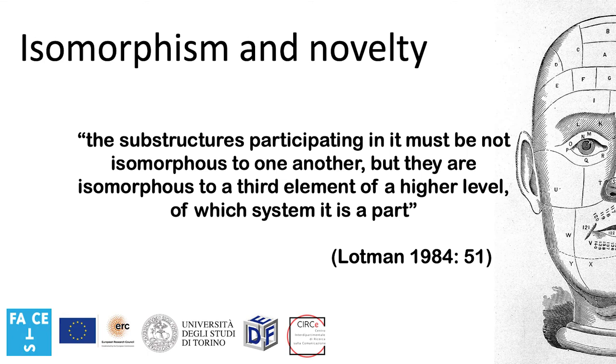Different is the case of the elaboration of novelty, of the creation of new texts. To address this point, Lotman draws on another type of isomorphism which remains unnamed. In this case, the substructures participating in it must be not isomorphous to one another, but they are isomorphous to a third element on a higher level of which system it is a part. The illustration given is the natural language and the iconic language of painted pictures, that are not isomorphous to one another, but each of them is, in different respects, isomorphous with the non-semiotic world of reality, of which they are a representation in some language.